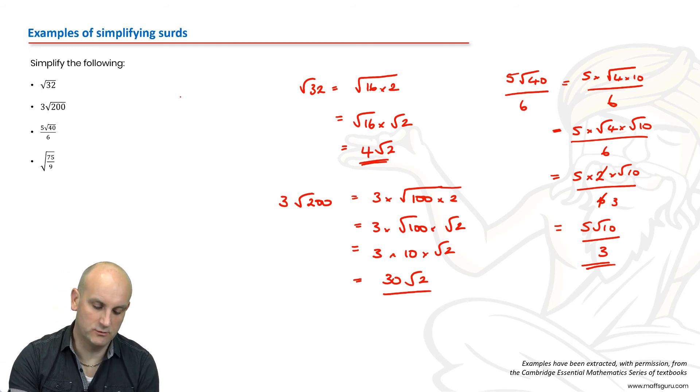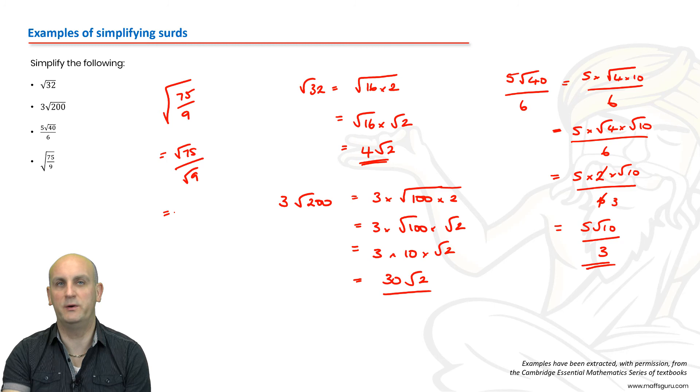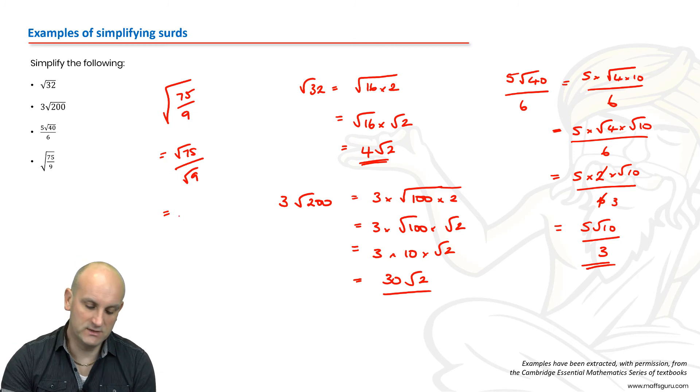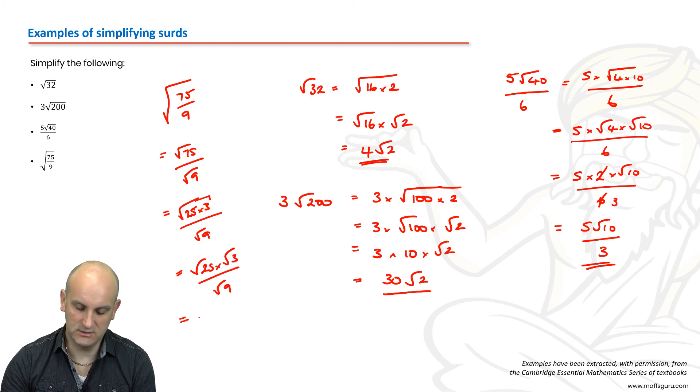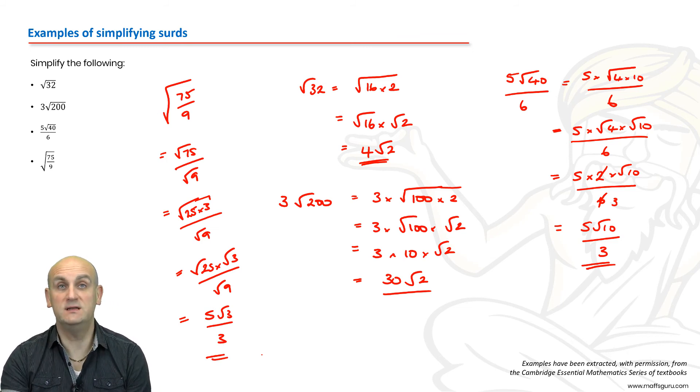The final example: root 75 on 9. We know we can split that up into the root of 75 divided by the root of 9. Now the root of 75, don't get tricked because your brain's going to go root 9 is 3 and you're going to leave it there. But we also have to work out root of 75 because we know that's the same as 25 times 3 all on root 9, which gives me root 25 times root 3 on root 9, which gives me 5 root 3 divided by 3. And can we simplify that anymore? Not at all. So simplifying this stuff is great. And later on in another video they're going to try and trick you.